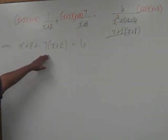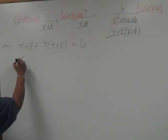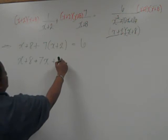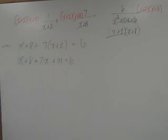Now we need to distribute this 7. Distributing 7, we have 7x plus 14 equals 6.